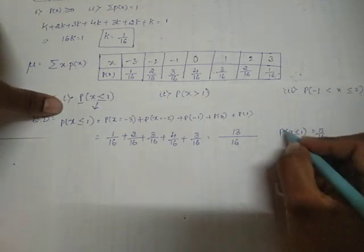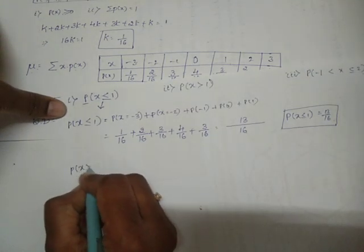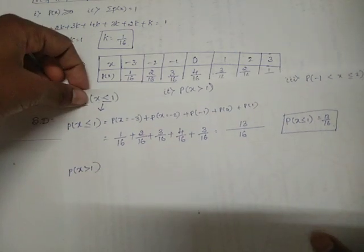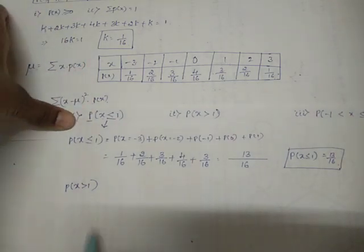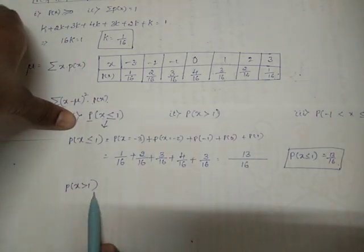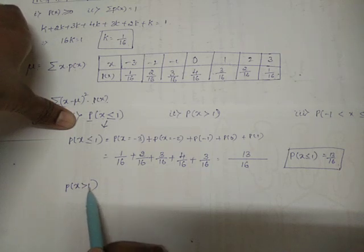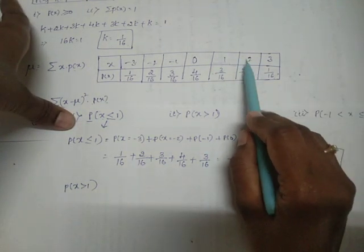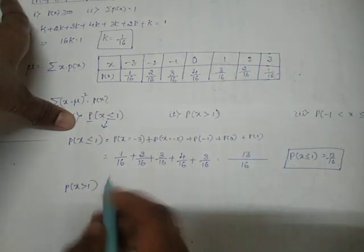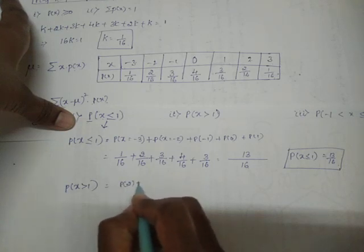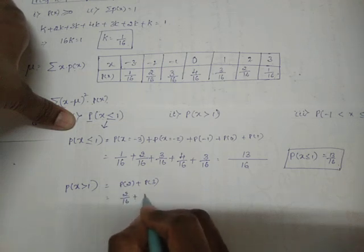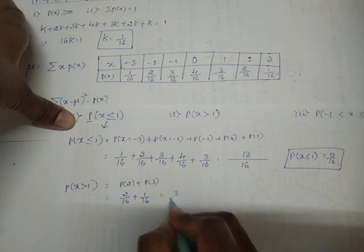Similarly, P(X > 1): here they are asking for the probability for values of x strictly greater than 1 — they have not included 1, so we exclude it. The next values after 1 are 2 and 3. So P(X > 1) = P(X = 2) + P(X = 3) = 2/16 + 1/16 = 3/16.